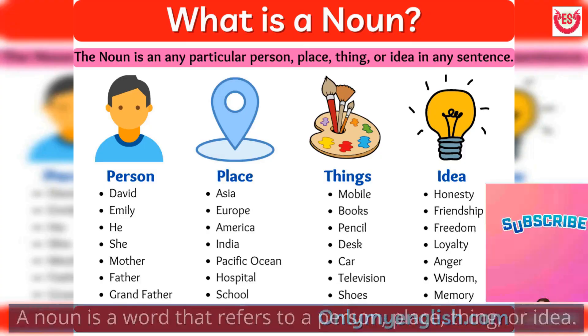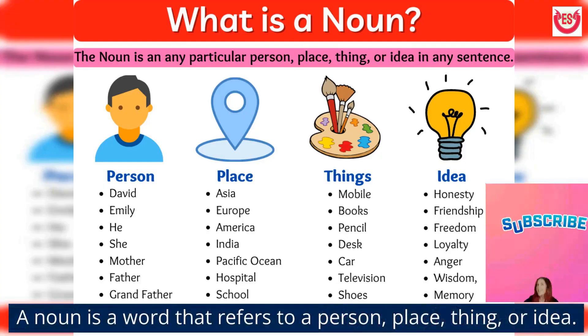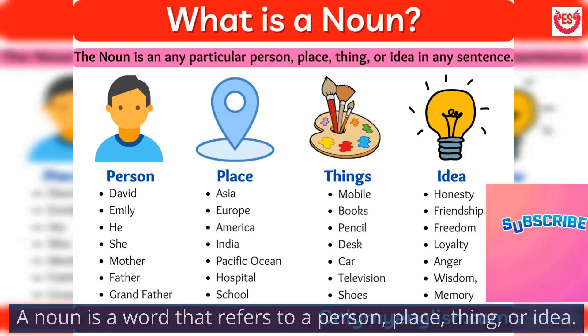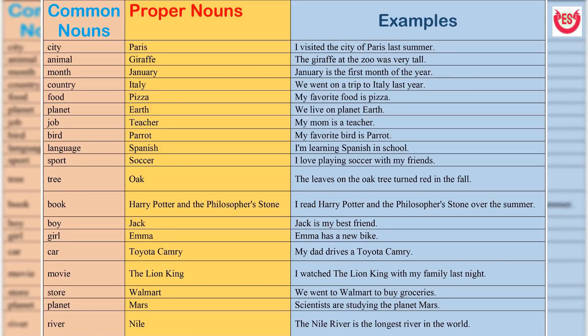A noun is a word that refers to a person, place, thing, or idea. There are two main types of nouns that we'll discuss here: common and proper nouns.